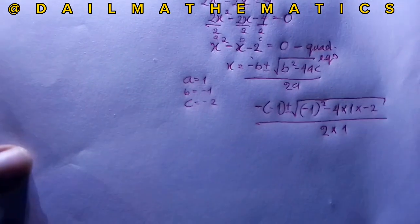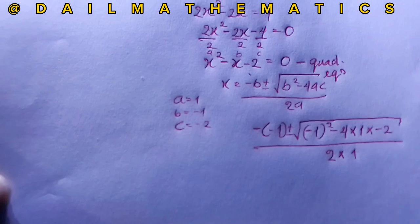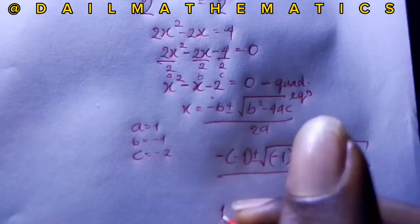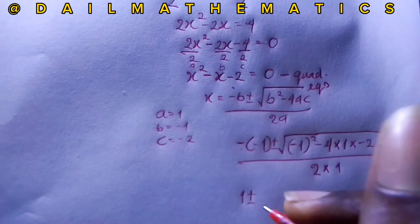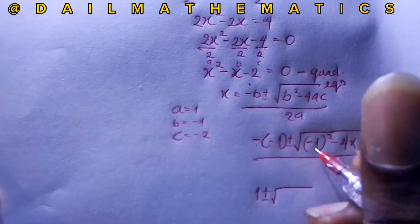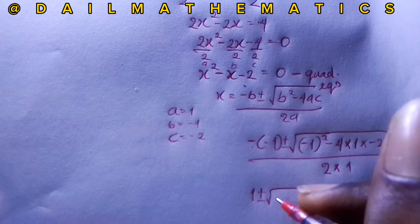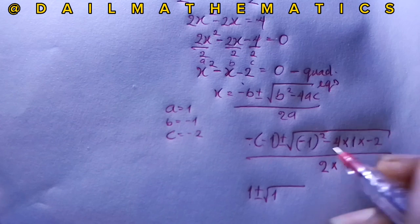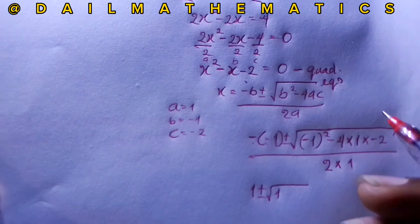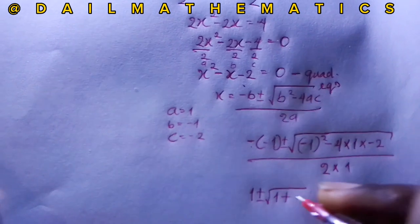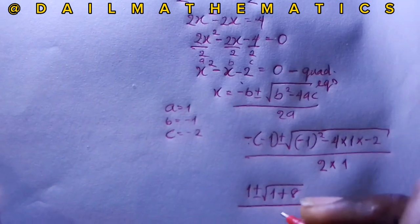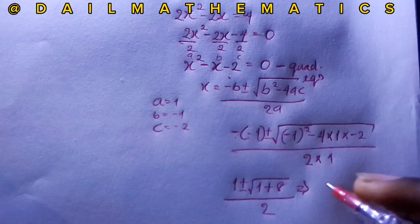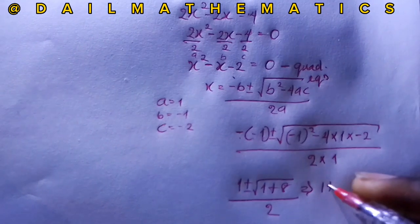Simplifying: minus times minus gives plus 1. Under the square root: (−1) squared gives 1; minus 4 times 1 times minus 2 gives plus 8. So we have 1 plus or minus square root of 1 plus 8, over 2.